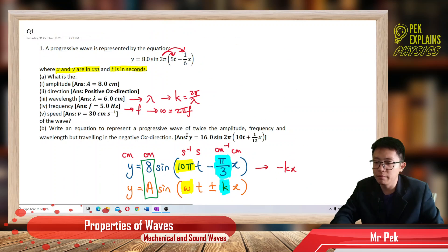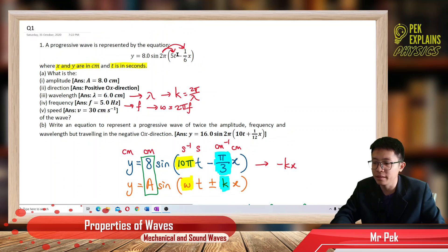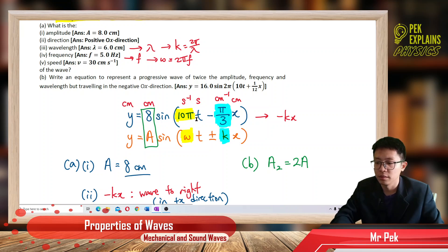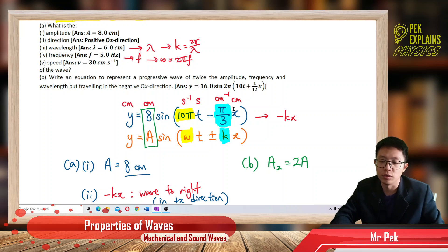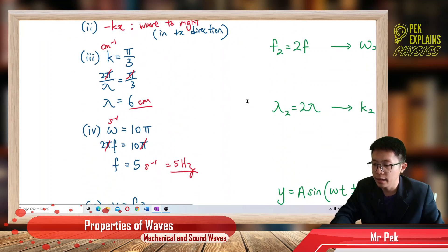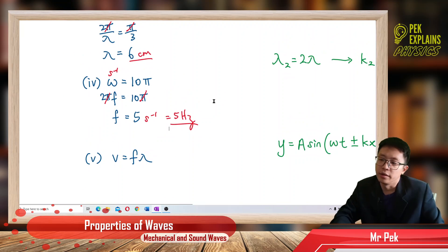Be careful: sometimes the time may be given in milliseconds, so the unit of omega would be per millisecond. Always check the units. The amplitude follows the unit of y, the wave number follows the unit of x, and omega follows the unit of time.